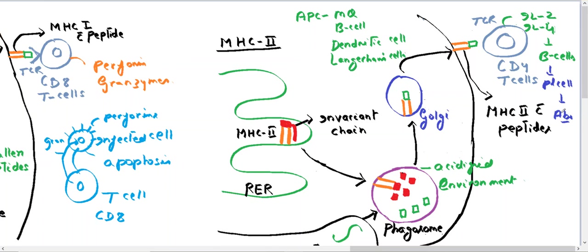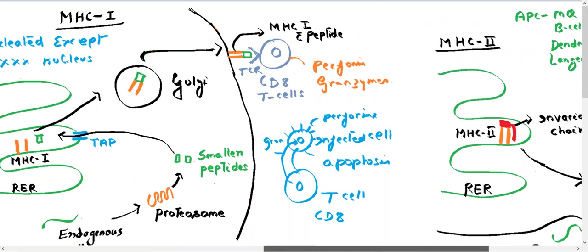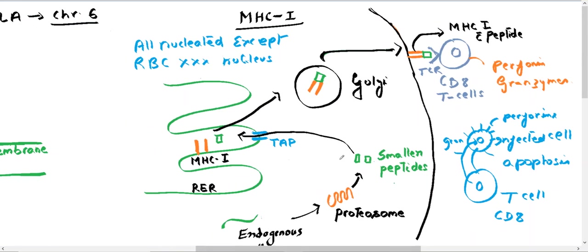To summarize: MHC molecules — called HLA in humans and located on chromosome 6 — present antigens to T cells. MHC1 is on all nucleated cells and presents endogenous antigens to CD8+ cytotoxic T cells. MHC2 is on antigen-presenting cells and presents exogenous antigens to CD4+ helper T cells.